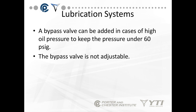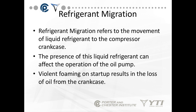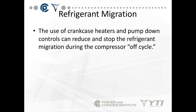A bypass valve can be added in cases of high oil pressure to keep the pressure under 60 PSI. That bypass valve is normally not adjustable. Refrigerant migration — we've talked about this before — is the movement of liquid refrigerant back to the compressor crankcase. It's one of the biggest issues when you have the condensing unit mounted outside in a cold climate. When the system is off, liquid refrigerant always migrates to the coldest spot. If the coldest spot is the compressor, it's going to mix with the oil and cause violent foaming on startup, pushing the oil right out of the compressor. The compressor will not run long without oil. We use a crankcase heater and a pump-down to reduce and stop refrigerant migration during the compressor off-cycle.